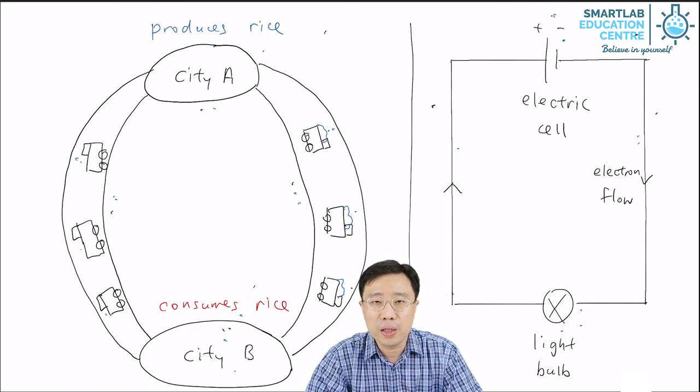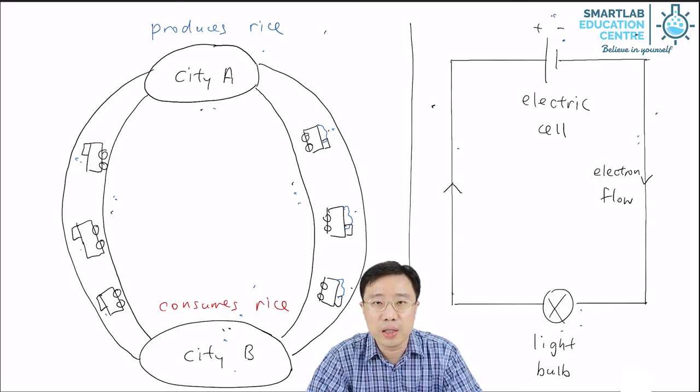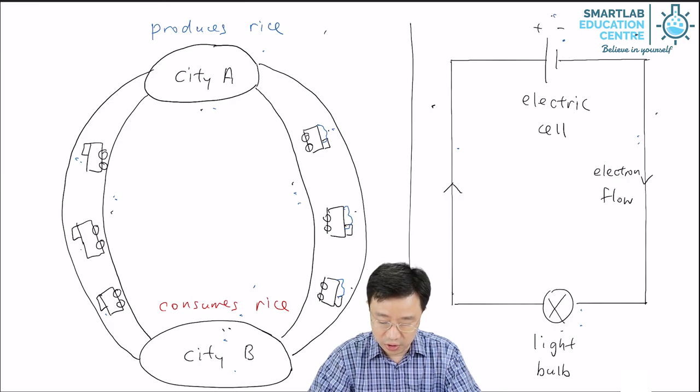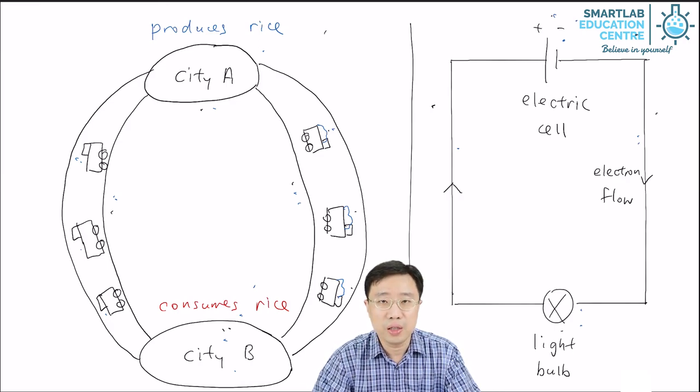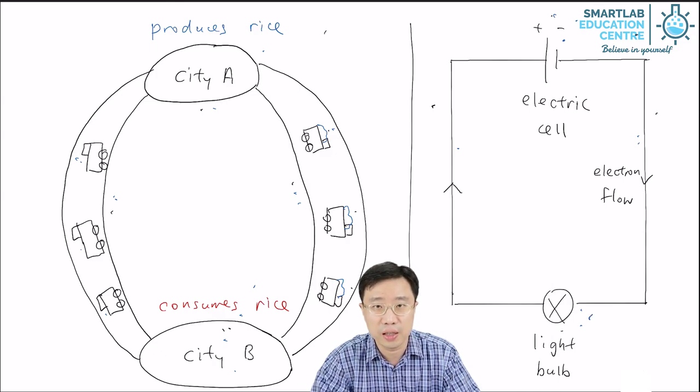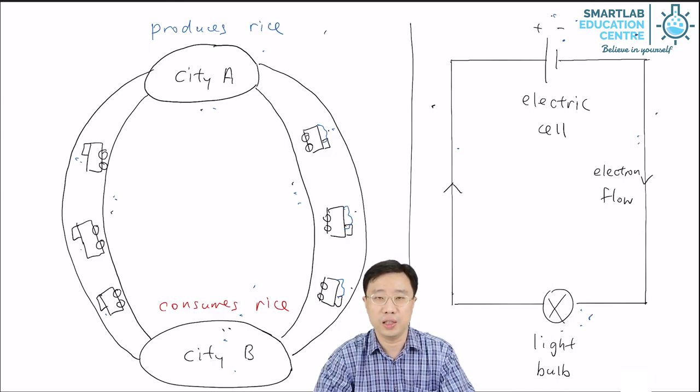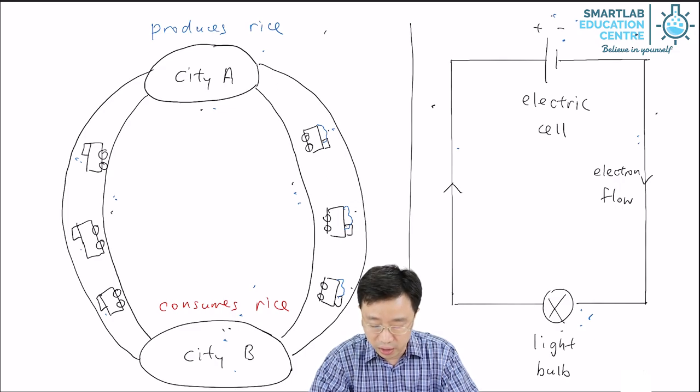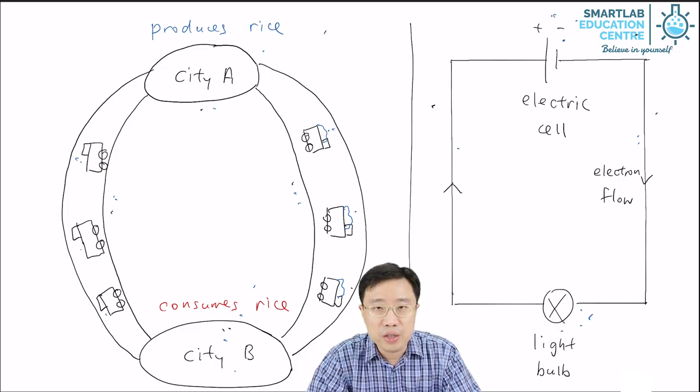So in summary, what an electric circuit is doing is to link, connect a source of electrical energy to a circuit component which uses electrical energy. That is what a circuit is doing, connecting a source of energy to something that uses energy.